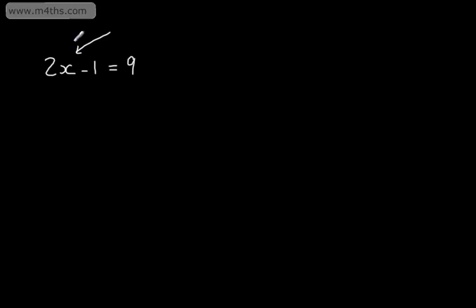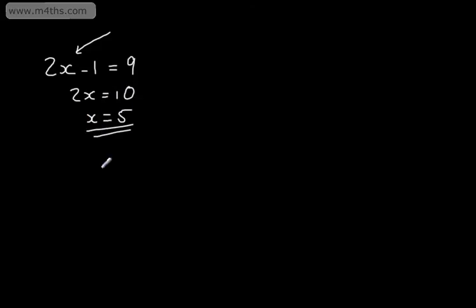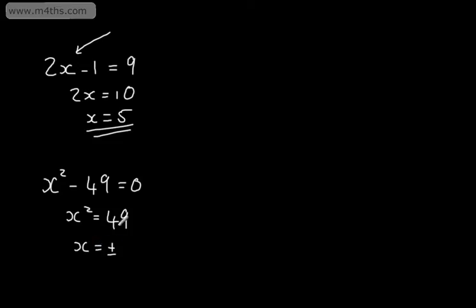When we have one unknown, we only need one equation. So I'd add one to both sides, giving 2x equal to 10, then divide both sides by 2, and x is equal to 5. We might have a quadratic equation: x squared minus 49 is equal to 0. Adding 49 to both sides gives x squared equals 49, and taking the square root, x equals plus or minus 7. So yet again, only one unknown, so we need one equation.